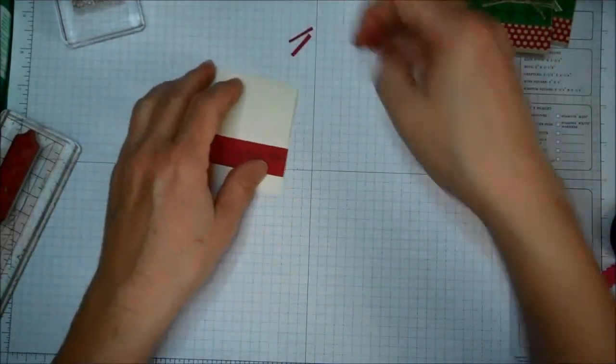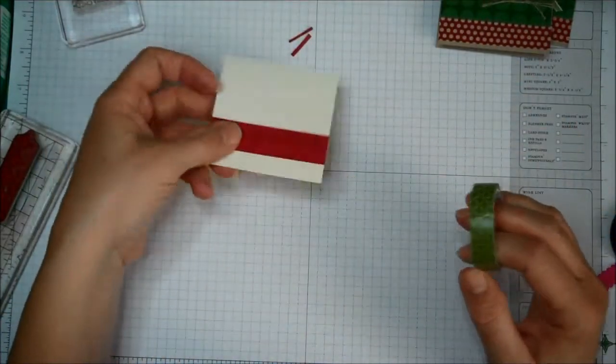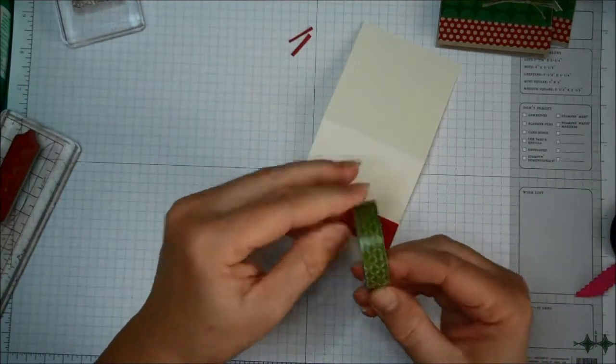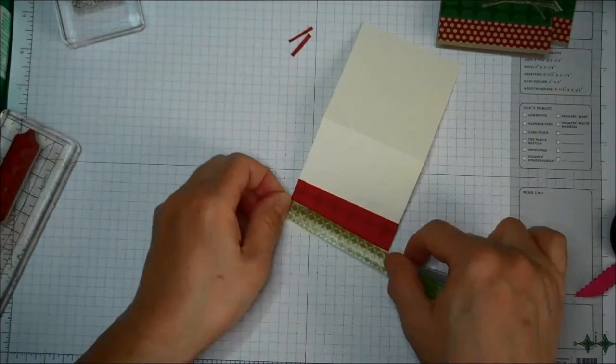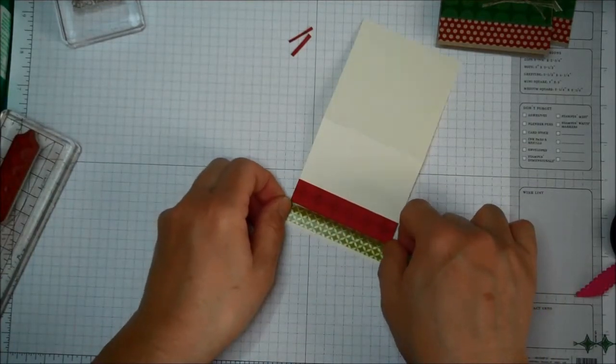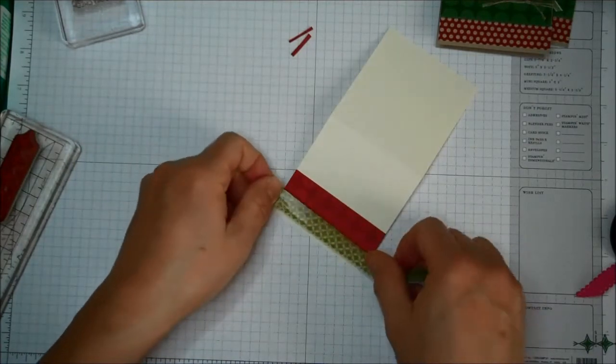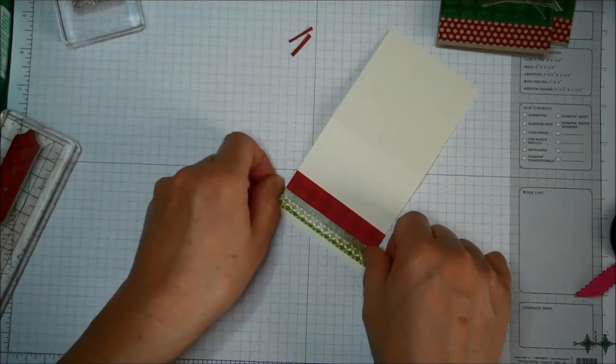And I'm trying to make these quick, quick and cute. So I'm just going to take now the Old Olive Washi Tape. I love the Washi Tape. I feel like it's like the perfect addition to your Christmas tags because it's quick.